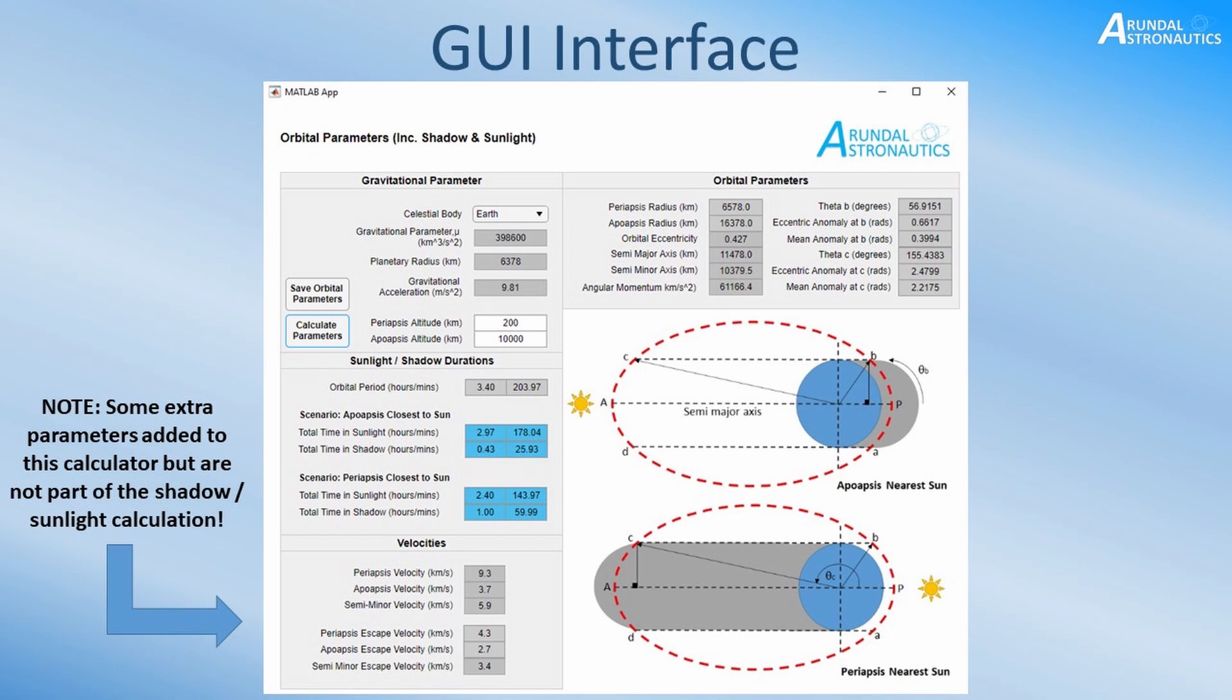We can see in the center left hand side we've got the important apoapsis and periapsis scenarios with the sunlight and shadow durations expressed in hours on the left hand box and minutes in the right hand side. We've also got the orbital period, and on the bottom left there's some extra orbital velocities that aren't necessary for this shadow and sunlight calculator but they're nice little additions to have.